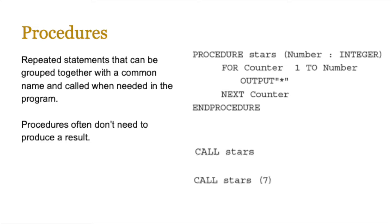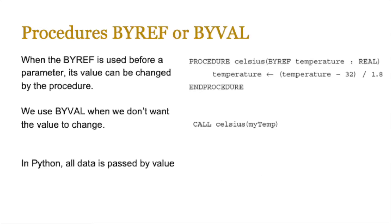Now procedures can use these parameters or arguments if it's going for the main program, by ref or by val. And when by ref is used, you're using it by reference. Its value can be changed by the procedure. When we use by val, that means we don't want to change the value of that parameter. Now in Python, all data is passed by value. So you can't really use by ref.